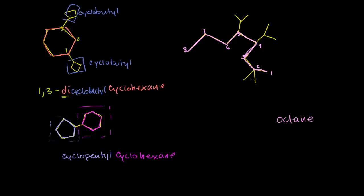Now we just have to add the groups to it. This right here is just one carbon attached to the main chain, and this is another carbon attached to the main chain. So both of these are methyl groups — meth- is for one carbon. We have two methyl groups on our entire chain, so it's going to be dimethyl. And both of the methyl groups are at our 2-position. So this is going to be 2,2-dimethyl.